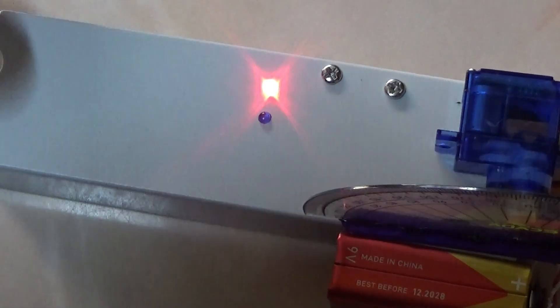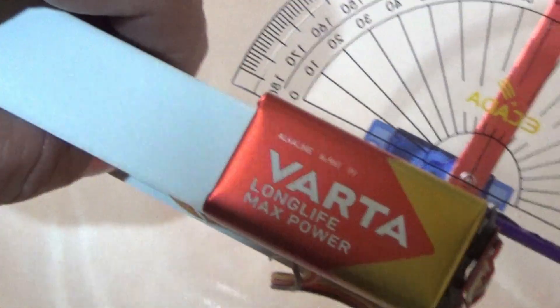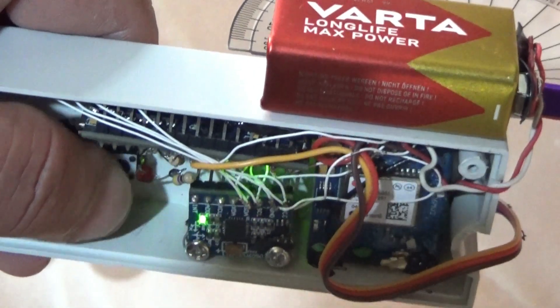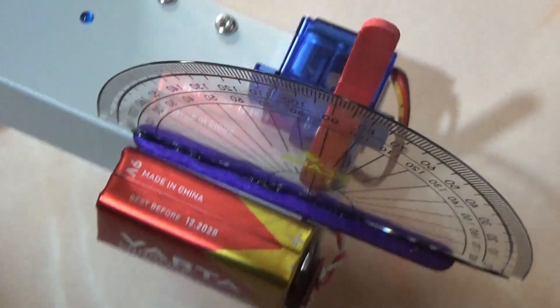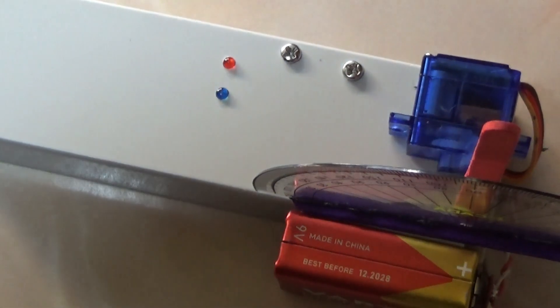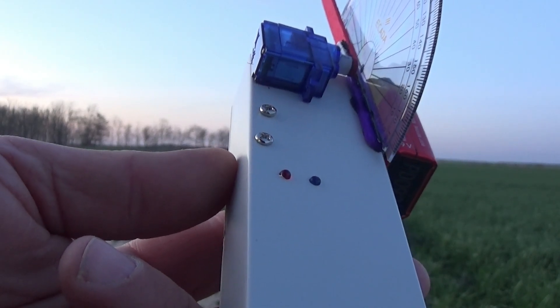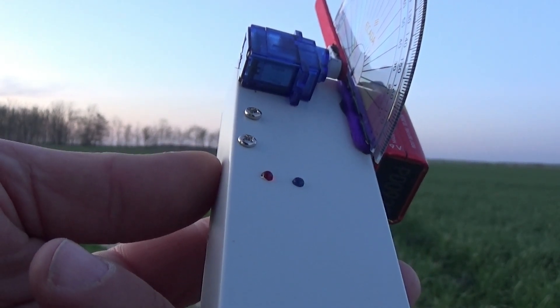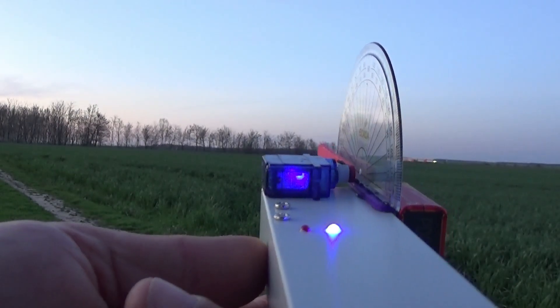With this, the calibration operation is complete. The device only works outside buildings. When the satellites are received, at least three, the blue LED starts to flash.